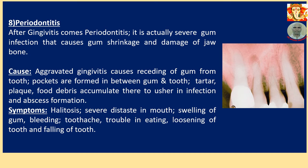Periodontitis comes after gingivitis. It is a severe gum infection that causes gum shrinkage and damage of the jaw bone. Aggravated gingivitis causes receding of the gum from the tooth — the teeth are denuded. Pockets form between gum and tooth where tartar, plaque, and food debris accumulate, causing infection and abscess formation. Symptoms: Halitosis, severe distress in mouth, swelling of gum, bleeding, toothache, trouble in eating, and loosening and falling of teeth.